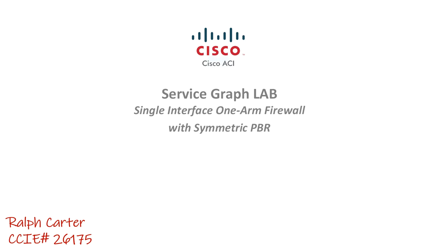Hello everyone, my name is Ralph Carter and today I'm going to show you how to configure a single-interface one-arm firewall cluster, or group of firewalls, service graph with symmetric PBR. This deployment is very popular when you want to inject a firewall or a group of firewalls in the path between different subnets. Cisco ACI makes it very simple to do that.